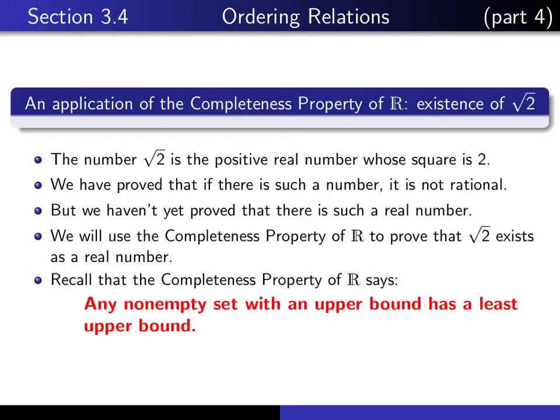Let me recall the completeness property of the set of real numbers. If we take the set of real numbers with the usual ordering relation of less than or equal to, then relative to that ordering relation, the completeness property says that any non-empty subset of the real numbers, if that set has an upper bound, then it has a least upper bound — in other words, the supremum of that set exists as a real number.